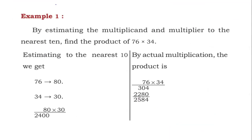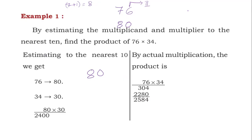Next example: Find the product by estimating the multiplicand and multiplier to the nearest 10 — 76 × 34. Estimating 76 to the tens place: unit digit is 6 — second case. Add 1 to the tens place: 7 plus 1 is 8. Put 0 in unit place. Estimation of 76 is 80.